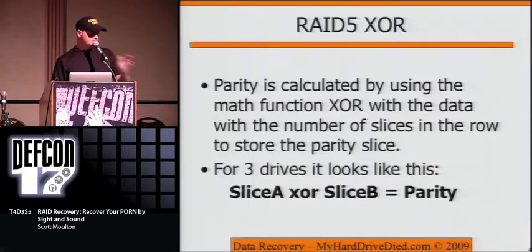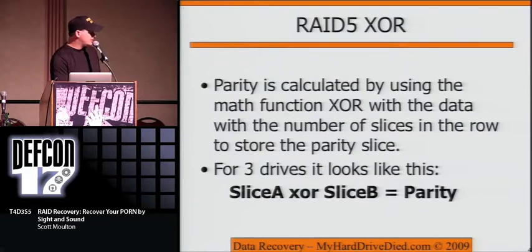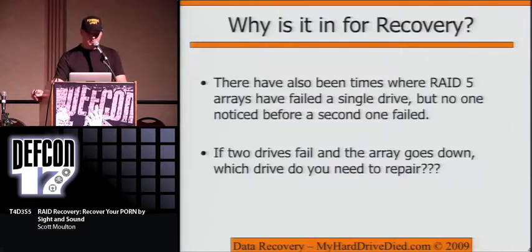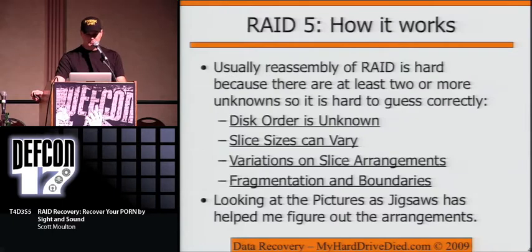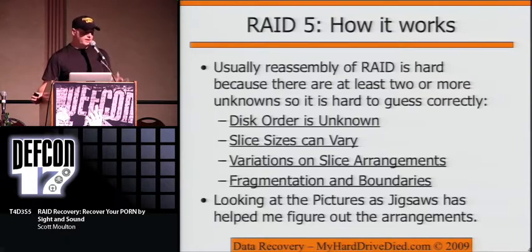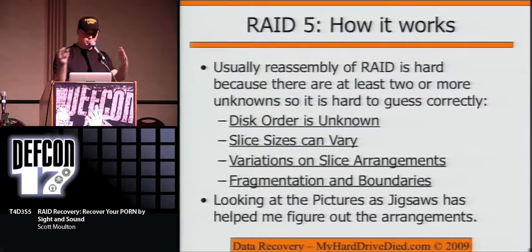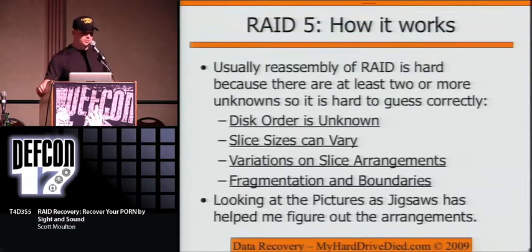The simple formula: you have an exclusive-OR function between drives to produce parity — that's the function we're trying to deal with. The hard part with RAID 5 is you've got so many unknowns. Besides which drive died, you have other unknowns. Hopefully you can eliminate two so you can guess the others. You'll end up with an unknown disk order — the easiest one to solve in most cases, as long as someone wrote a number on each drive before removal.